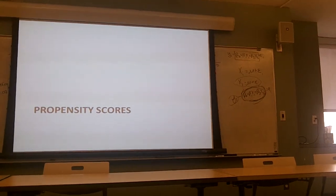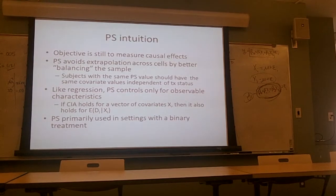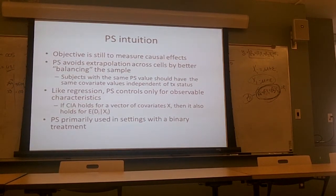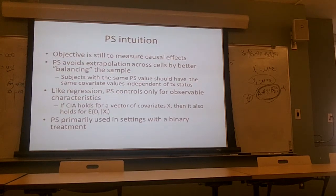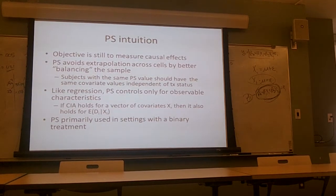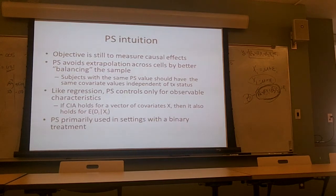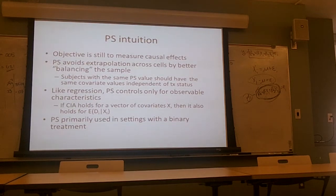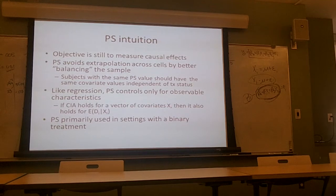Let's first start talking about propensity scores. The intuition behind propensity scores is that we're still trying to measure causal effects, but unlike regression where there may be this problem of extrapolation across cells where there's not good balance, the propensity score is an explicit way to try to address this balance issue — to try to make the sample more balanced. After we do the propensity score approach, we expect that individual subjects with the same propensity score level should have the same covariate values independent of their treatment status.